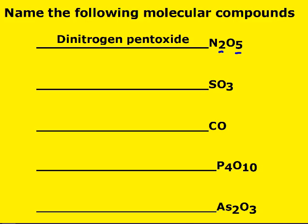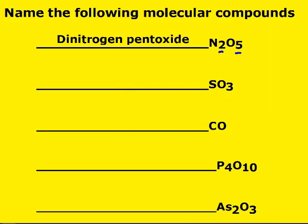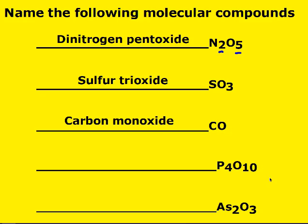A common mistake is with SO₃ — people think it's the sulfite ion, but notice there's no 2− charge on it. That version is an ion, while SO₃ is not. We have one sulfur and three oxygens. One sulfur is mono, but we don't put mono on the first element. Three is tri, so it's sulfur trioxide. For one carbon and one oxygen: instead of saying monocarbon monoxide, it's just carbon monoxide — the 'o' from mono gets dropped to avoid two o's next to each other.